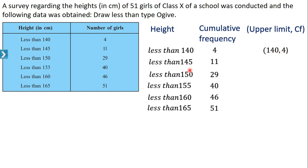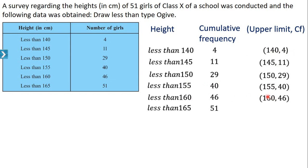The next point is (145, 11), then (150, 29), then (155, 40), (160, 46), and (165, 51). When a less than type cumulative frequency distribution table is given, you only need to write the points — upper limit versus cumulative frequency.